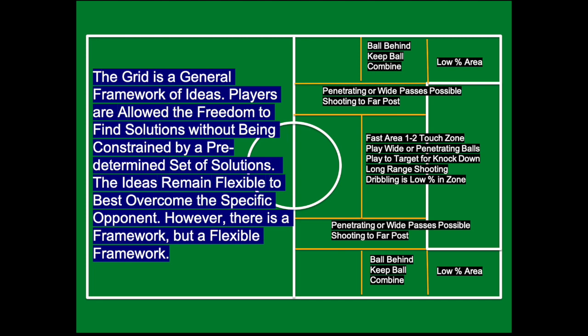In the middle of the field is the fast area — a one-touch or two-touch area. Players can play wide or penetrating balls through into the box, which is obviously a very dangerous area for the ball to be. If you have a target forward, you could play balls into them to knock it down right in front of the box, where you press, win it, and try to score right away. Dribbling is actually a low percentage option on top of the box in that middle area because that's usually where the most players are located.